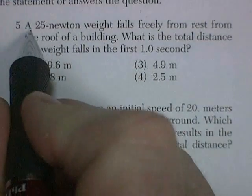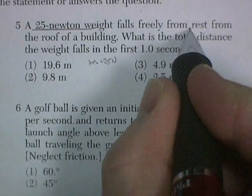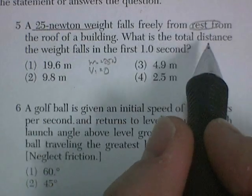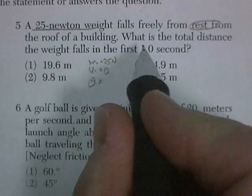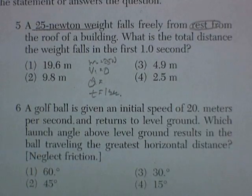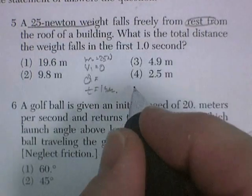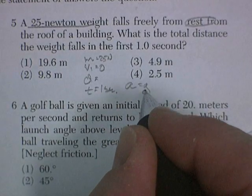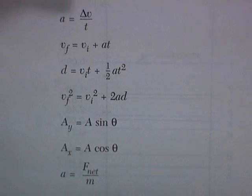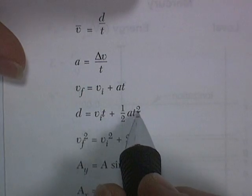Question 5. A 25-Newton weight. Mass is 25 Newtons. Falls freely from rest. Velocity initial is 0. From the roof of a building. What's the total distance it falls in a time of 1 second. Well, let's go find us a formula. But before I do that, let's remember what causes it to fall. It's the acceleration due to gravity. 9.8 meters per second squared. So we find this one. Very popular.